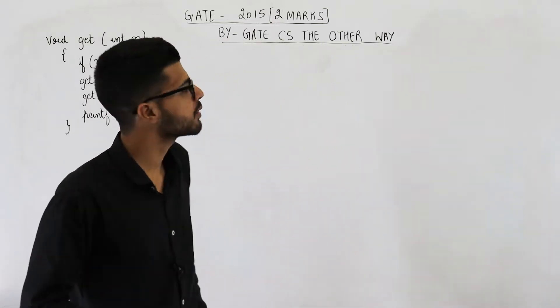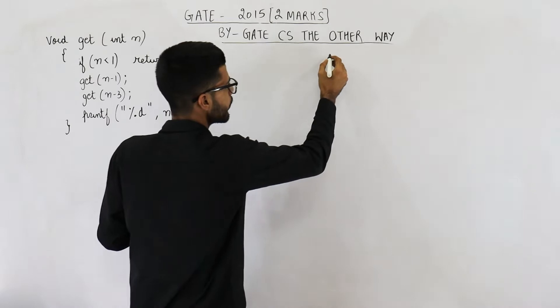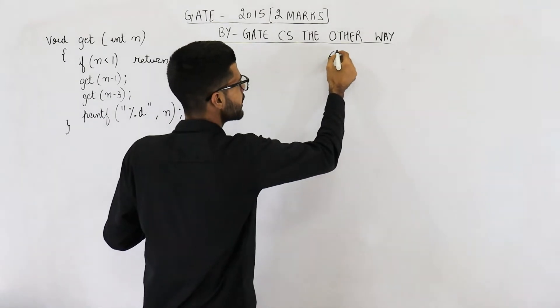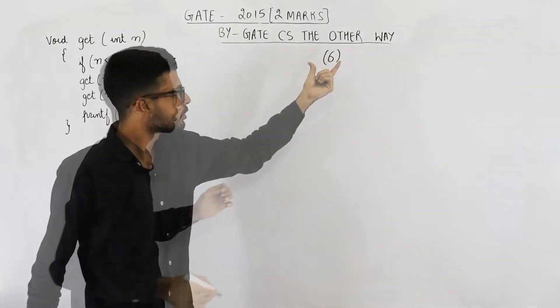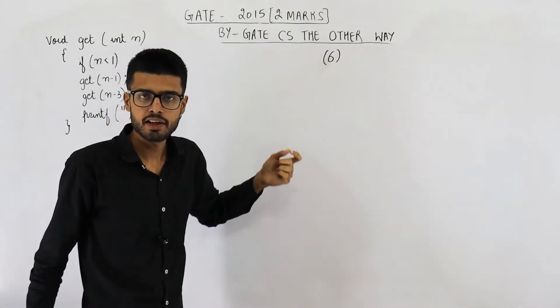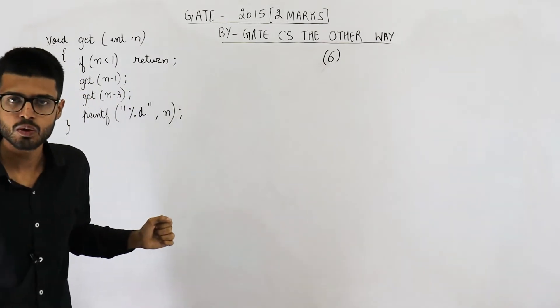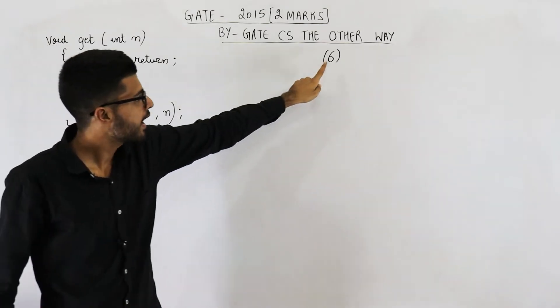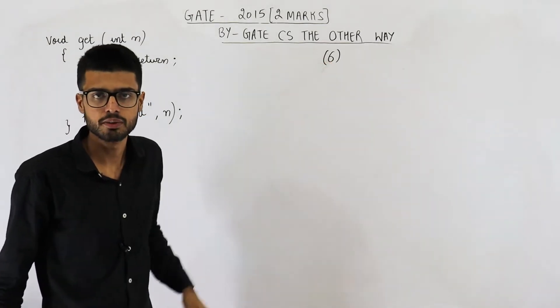So the parameter that we are passing is 6. I am writing 'get(6)' — this notation indicates that this function has been called and 6 is the parameter.